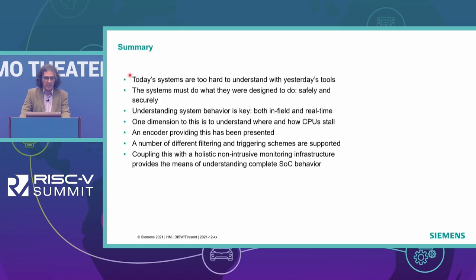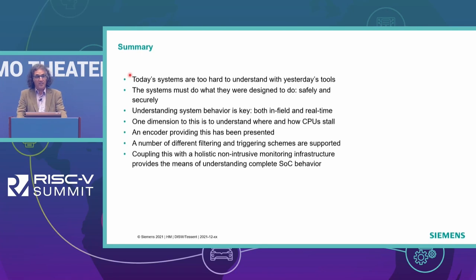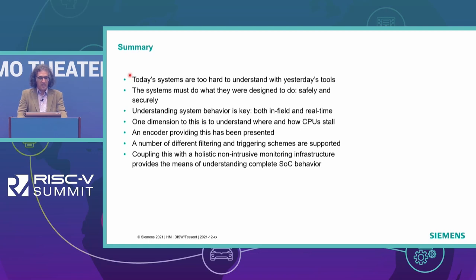To recap: today's systems are fairly complex and hard to understand, especially without the right tools. Systems must do what they're designed to do safely and securely, and one dimension of that is understanding where CPUs stall. A trace encoder with cycle-accurate mode provides this information with a number of encoding efficiency features. Thank you very much for your time today — if you have any questions, please stop by and ask.